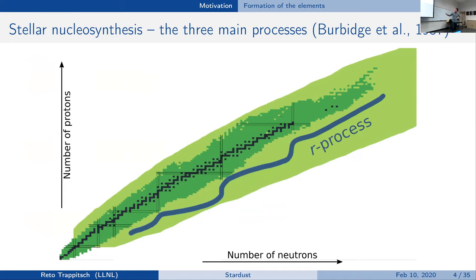Then you have elements like the actinides — uranium, plutonium — that Livermore never has to motivate. Those elements, especially uranium and thorium, that show up naturally and that we see in the meteoritic record in the early solar system, we need to make somehow as well. We already have the slow neutron capture process, so it's easy to come up with something that just goes faster: the rapid neutron capture process, which moves things out to the drip line.